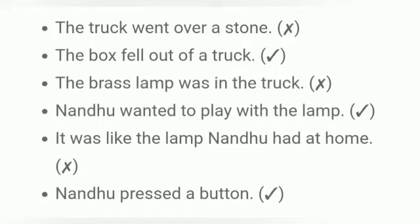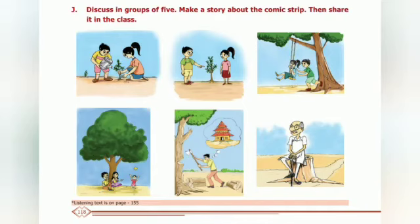Next one: 'It was like the lamp Nandu had at home' — incorrect statement. Last one: 'Nandu pressed a button' — correct statement. Exercise J: Discuss in groups of five, make a story about the comic strip, then share it in class.